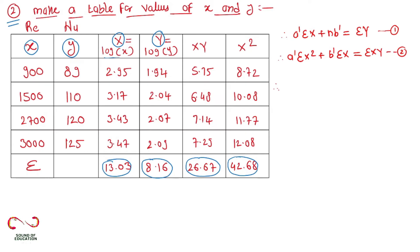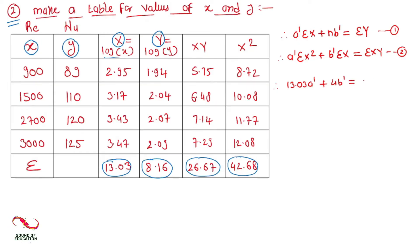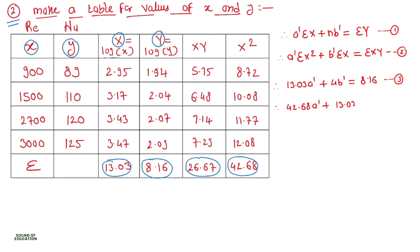Now substituting the values: summation(X) = 13.03, so equation 3 is: 13.03 * a' + 4 * b' = 8.16. For equation 4, with summation(X²) = 42.68: 42.68 * a' + 13.03 * b' = 26.67.